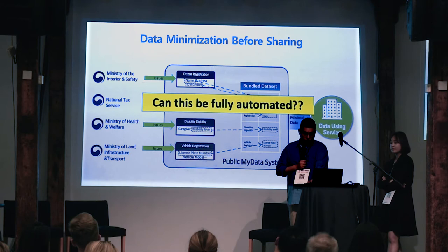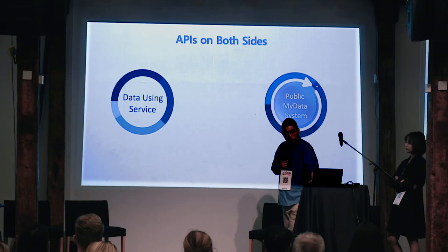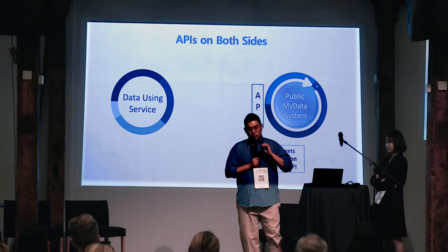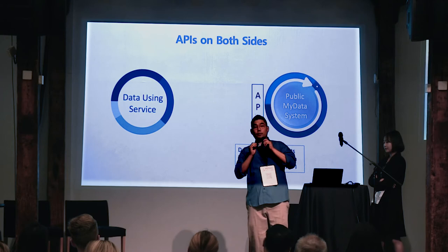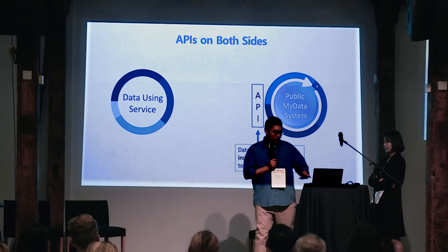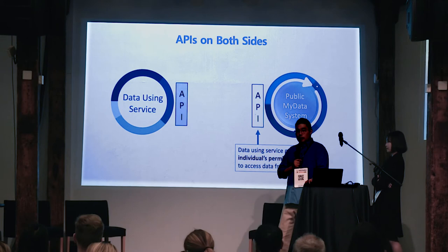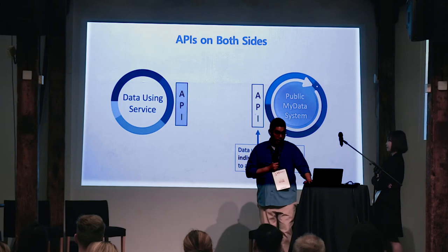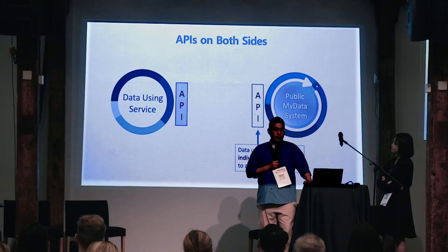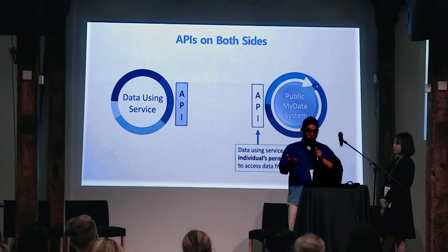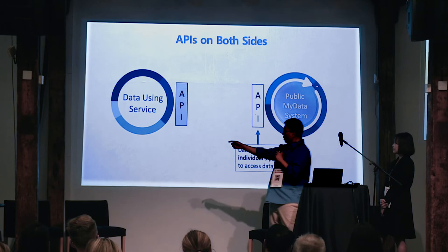The second point: normally, the data source is the one that provides the API, and the data user service accesses it to request data if the individual has given prior consent. But the right to data portability in Korea can actually be translated as the right to demand data transfer — not the right to request, the right to demand. The people at the Ministry of Interior and Safety asked: what happens if the person wants to send data but the recipient doesn't know how to receive it? The answer they came up with was this extra API on the server side.